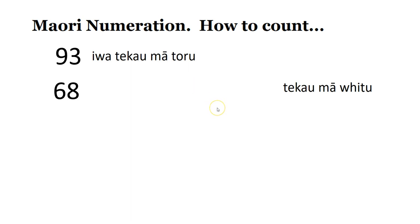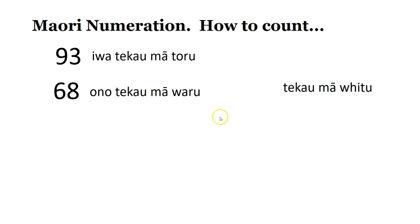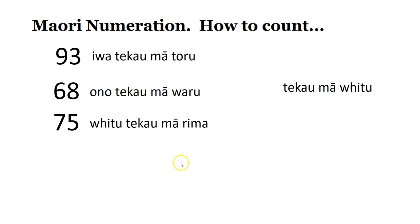What about sixty-eight? Ono te kau ma waru — so we have six tens, add eight. Seventy-five — fitu te kau ma rima, so that means seven tens, add five.